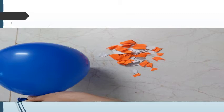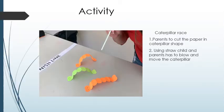Blow the balloon and tear the piece of paper and keep it in front of the balloon. Now just open the mouth of the balloon in front of the piece of paper - see how the paper flies! Yes! This is how we can identify that air moves things.